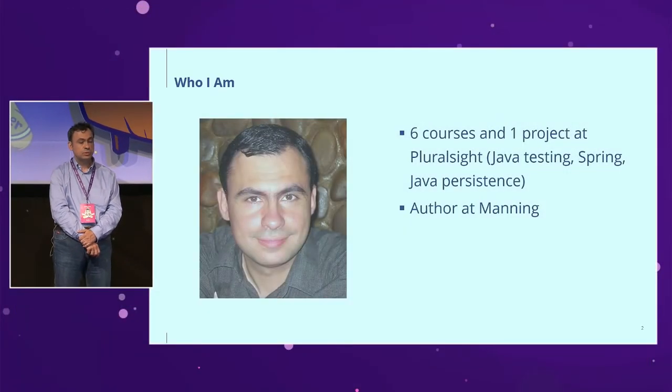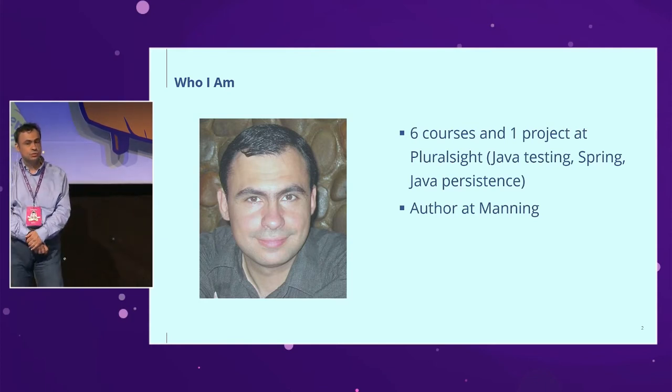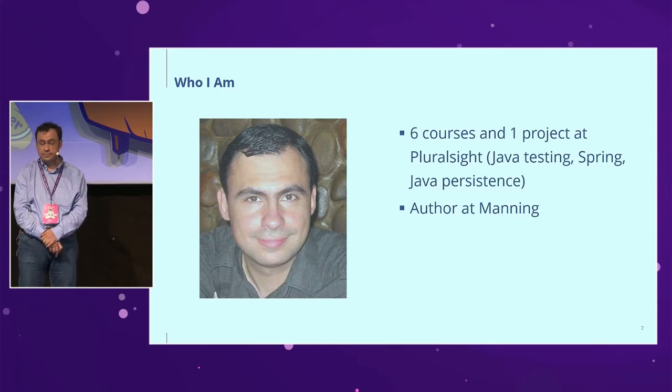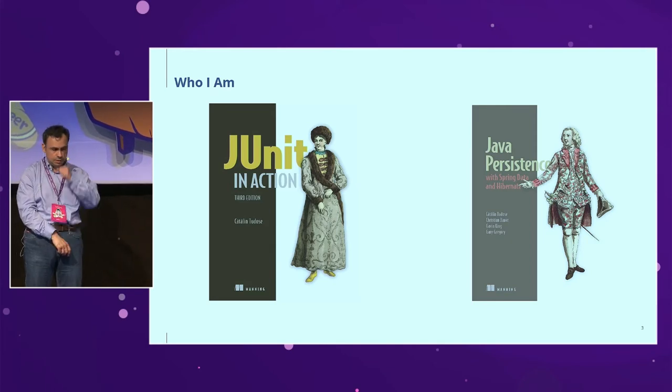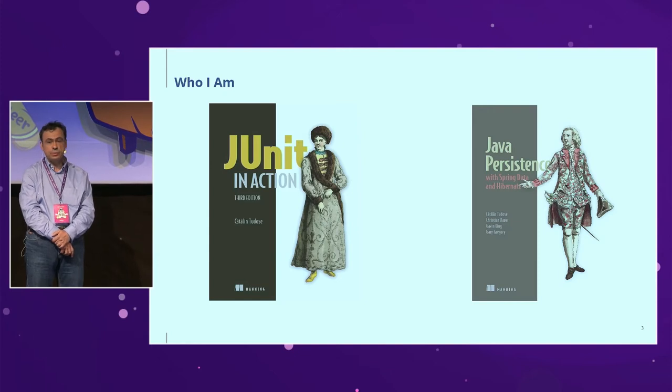My current work is in Luxoft Company, which is also present here in Sofia, as a Java and Web Technologies Expert and Java Chapter Lead. Most of the time I do teaching, creation of courses, providing expertise, coaching. I'm also the author of six courses and one project at Pluralsight, mostly on testing and Spring. And these two books: JUnit in Action, published in November 2020, and a book about Java persistence, which is currently under print and will be ready in summer or fall.